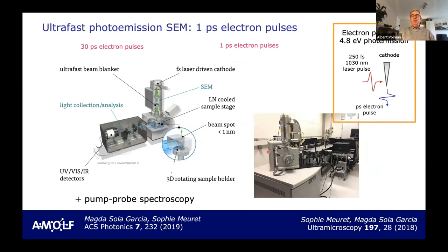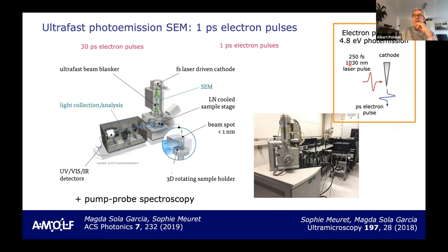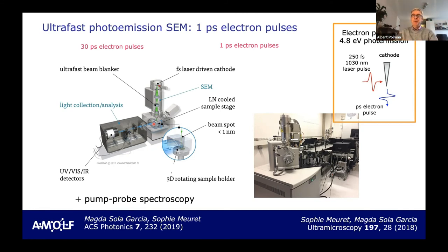I want to show a new microscope we've constructed to bring time resolution down to one picosecond. Here we use photoemission, where a 250 femtosecond laser pulse hits the cathode. We lower the temperature and extraction voltage so it doesn't give a continuous beam. By photoemission we generate a bunch of electrons making picosecond electron pulses. We just published the first paper on this nanoscale spectroscopy, also doing pump-probe spectroscopy: the laser drives the tip to make electron pulses, but the same laser also goes into the sample and optically excites it. We can vary the time delay between the two — pump with the laser and read out with the electron beam or vice versa.